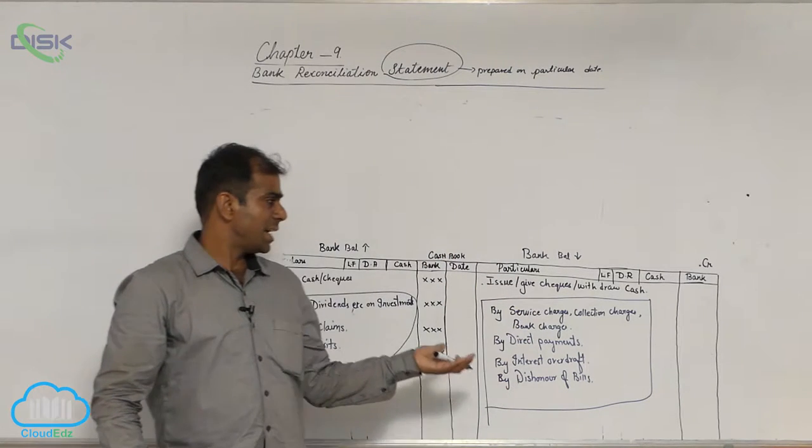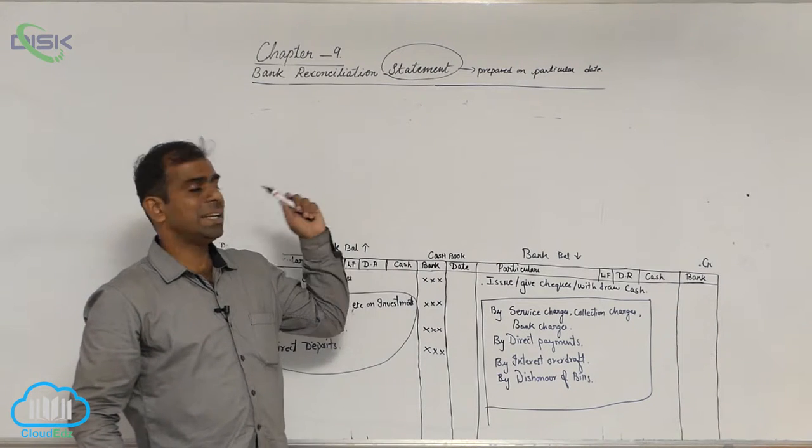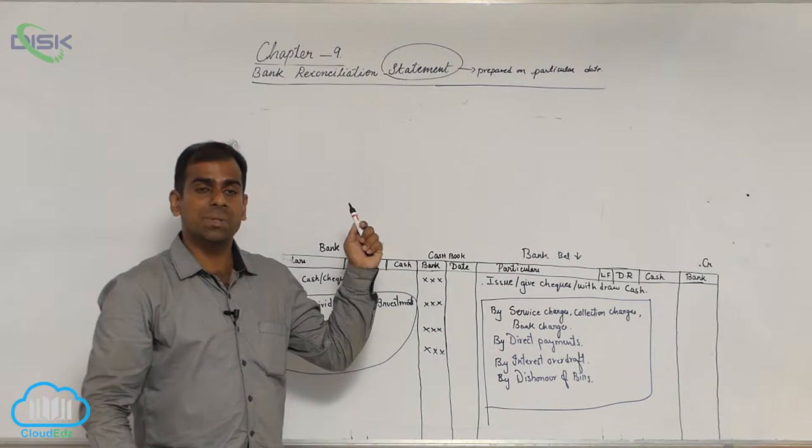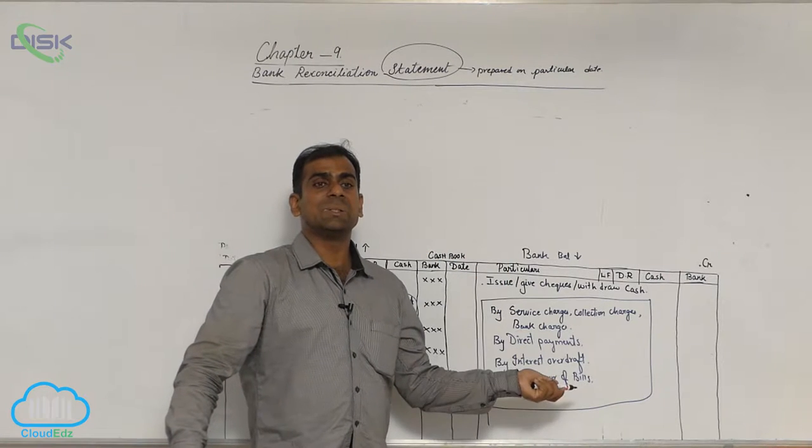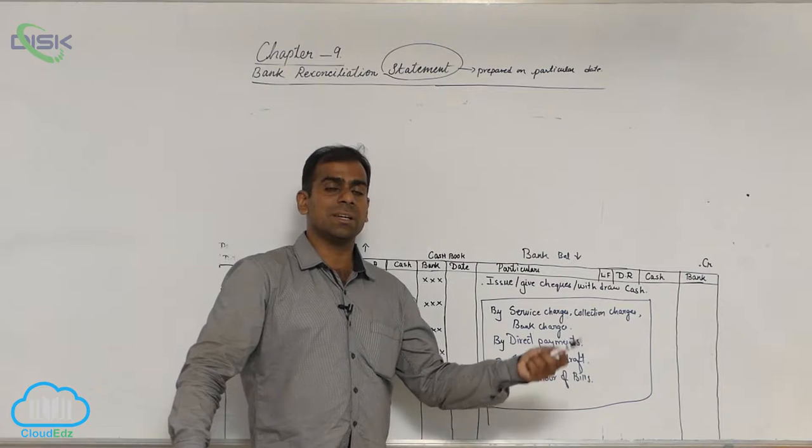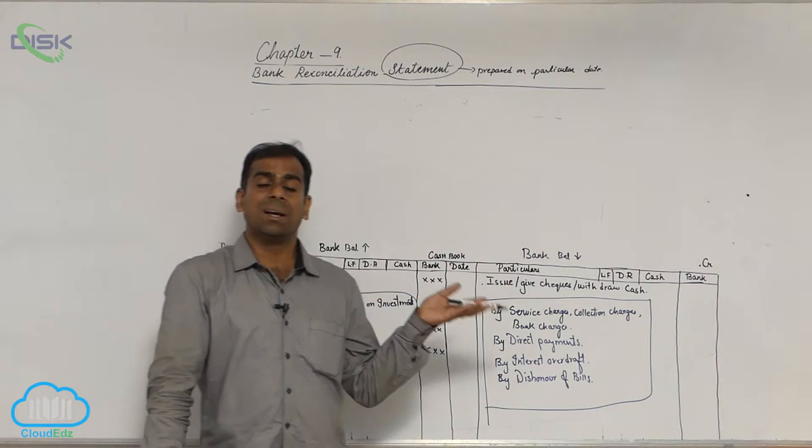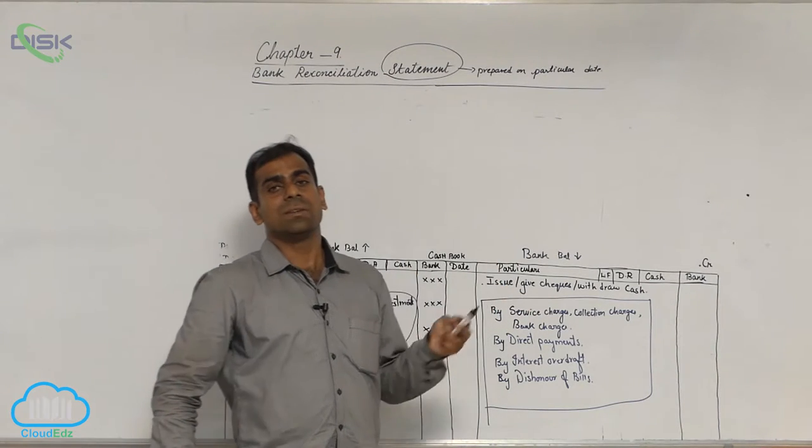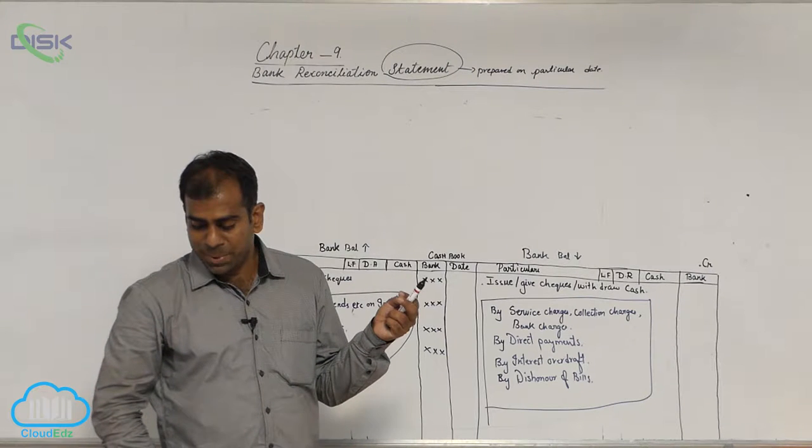Suppose some amounts are less according to your accountant in the cashbook. So immediately you compared it with the passbook and you have seen the bank has given that money, but this person has not recorded it in the cashbook. Maybe he has used some fraudulent means to withdraw that amount. Such things can be found out by preparing this thing.